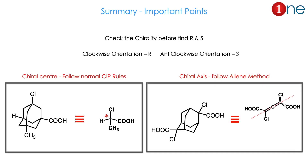Let us summarize the important points. Before getting to R and S, check the chirality — whether the compound has a plane of symmetry or not. Clockwise orientation means R; anti-clockwise means S. Then see whether the compound has a chiral center or a chiral axis. For a chiral center, it is straightforward — follow the simple normal CIP rules. For a chiral axis, follow the allene method: choose the front side, fix the priority, then find the configuration.